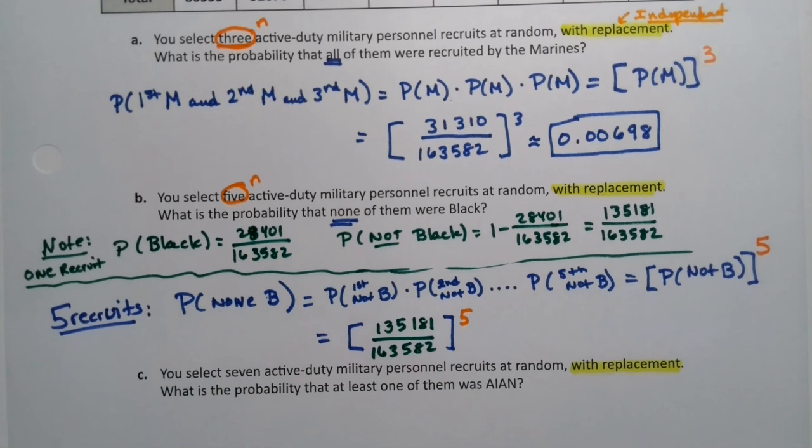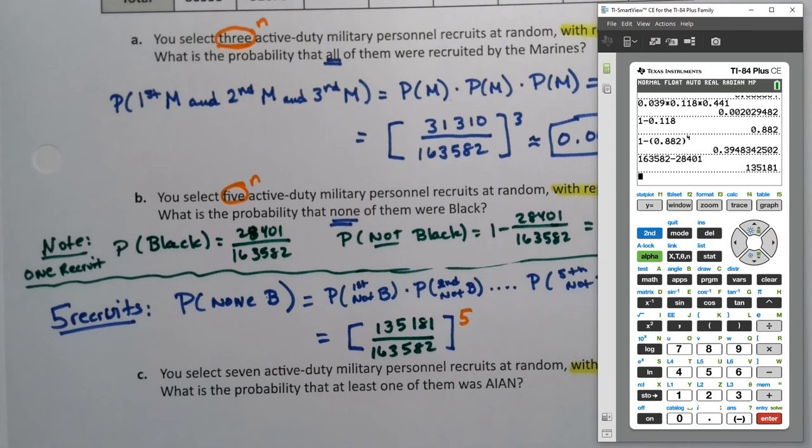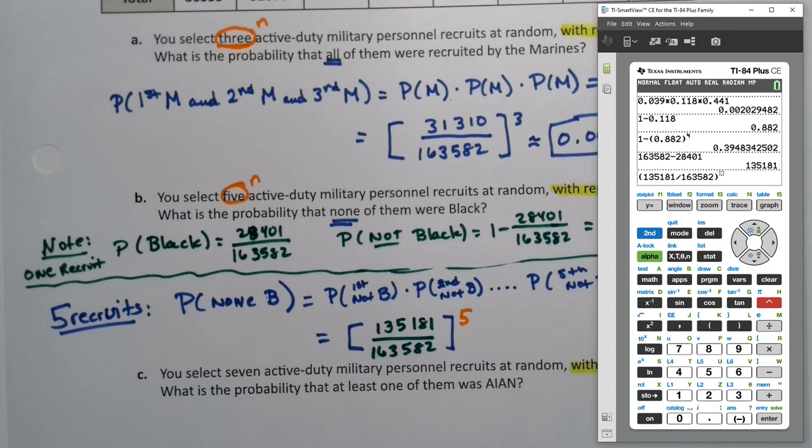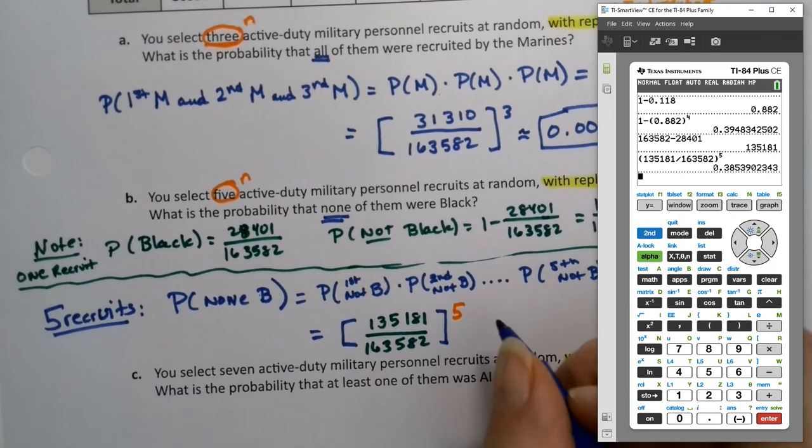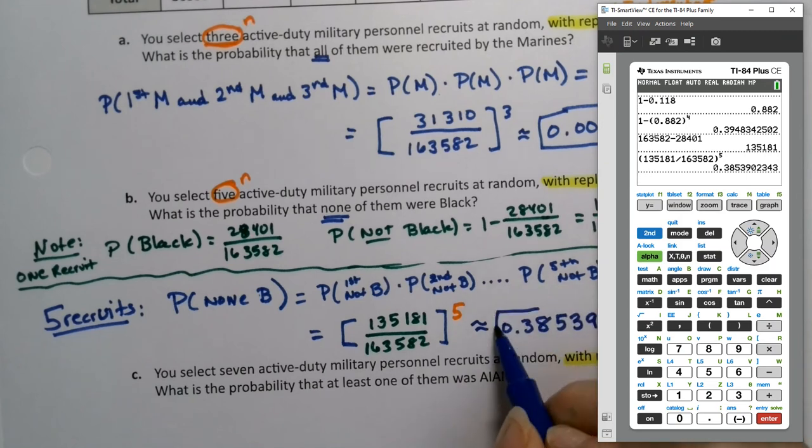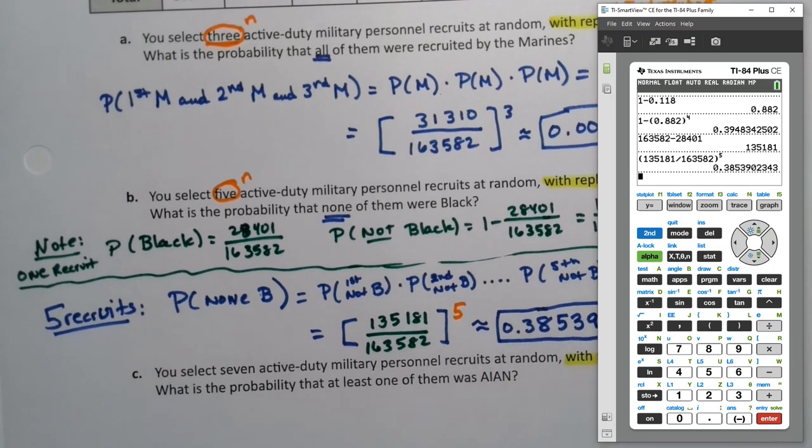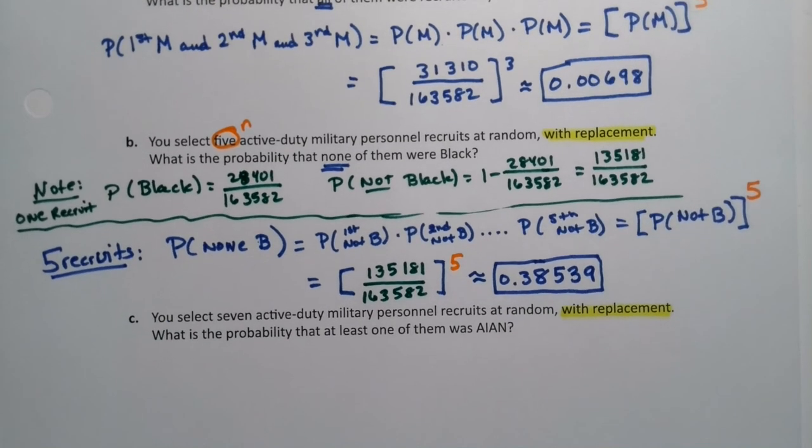And again, don't get worried about brackets. I just do that sometimes, it's parentheses. It's just another way to write parentheses. So I'll do this one with the calculator just to spice things up. So 135,181 divided by 163,582, close parentheses, I want to raise it, so caret button to the fifth, enter. And I get 0.3854. Actually, I'm gonna go 0.38539. I like the look of that number.